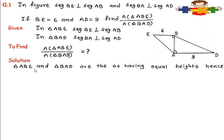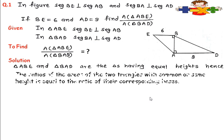In triangle ABE and BAD, they have equal heights — or you can say a common height. Hence, the ratio of the areas of the two triangles with the same height is equal to the ratio of their corresponding bases. This we have learned in our previous video: when we take two triangles with a common height, the area ratio equals the base ratio.